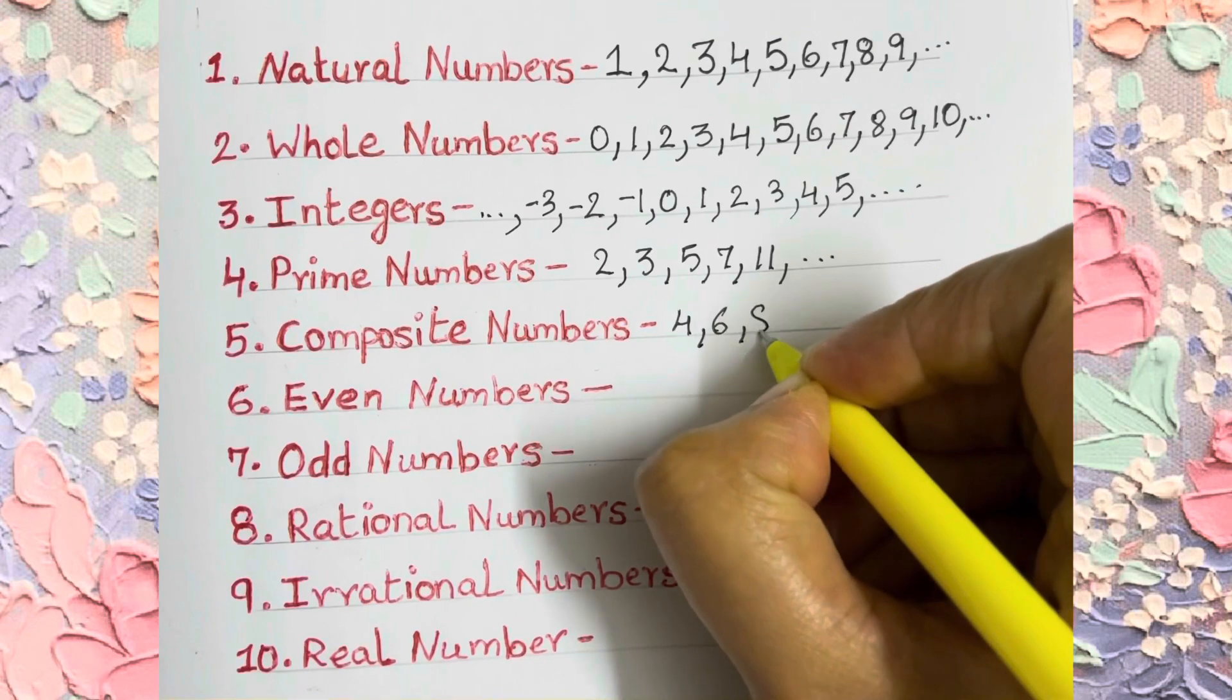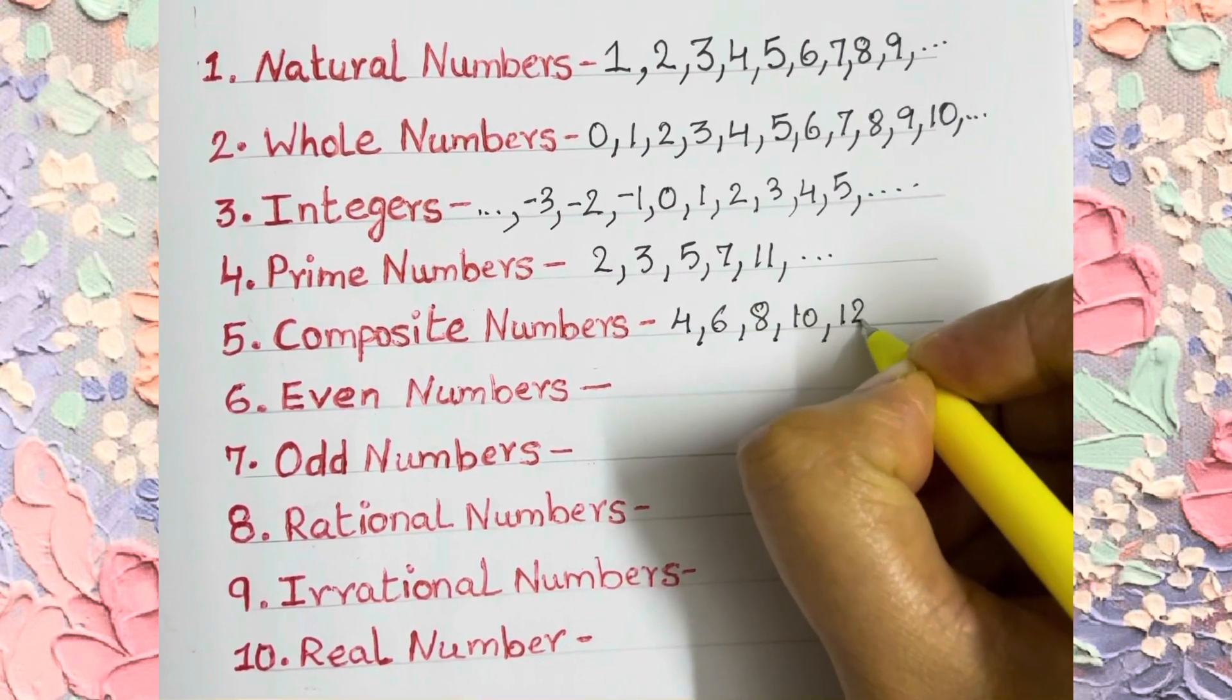Now the numbers which are opposite to prime numbers, which have more than two factors, are called composite numbers.